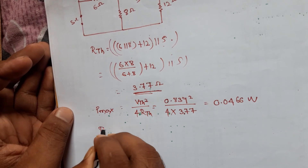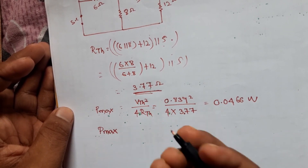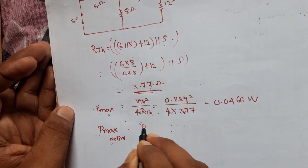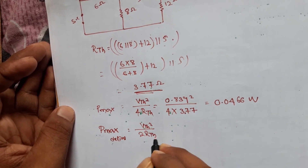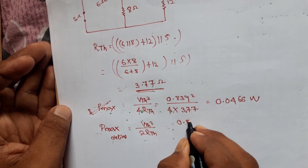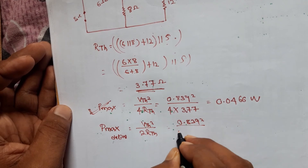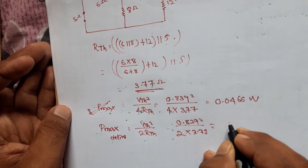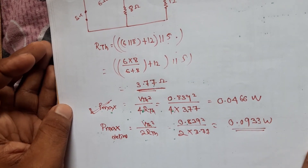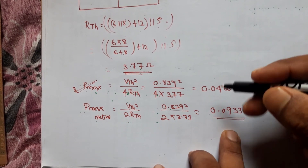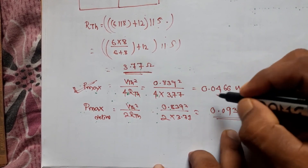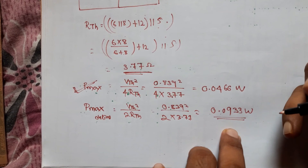The total power delivered to the circuit is Vth² / (2·Rth) = (0.8391)² / (2 × 3.77) = 0.0933W. The maximum power through the load is 0.0466W, which is exactly half the delivered power — confirming that the maximum power transfer theorem gives only 50% efficiency.